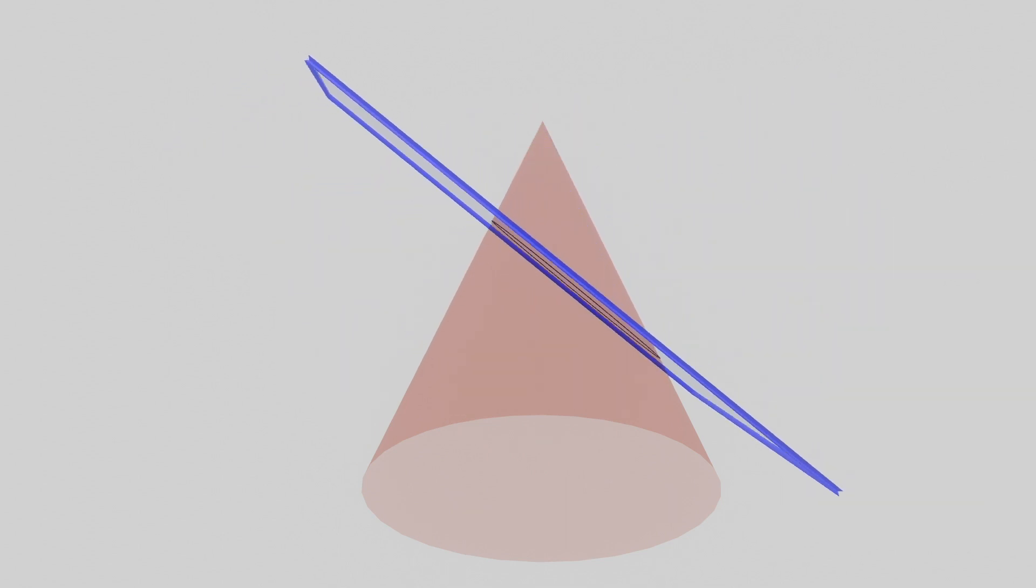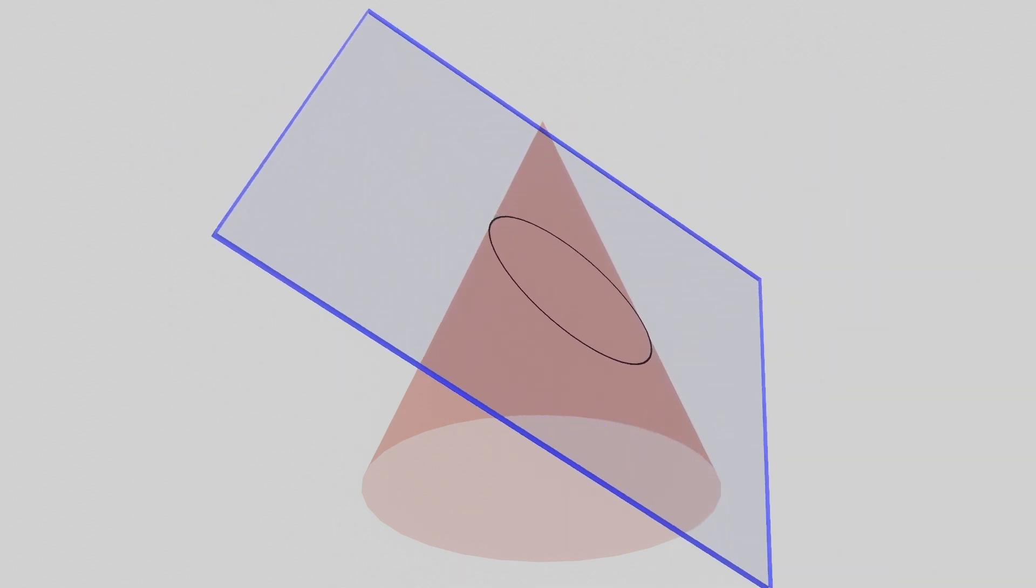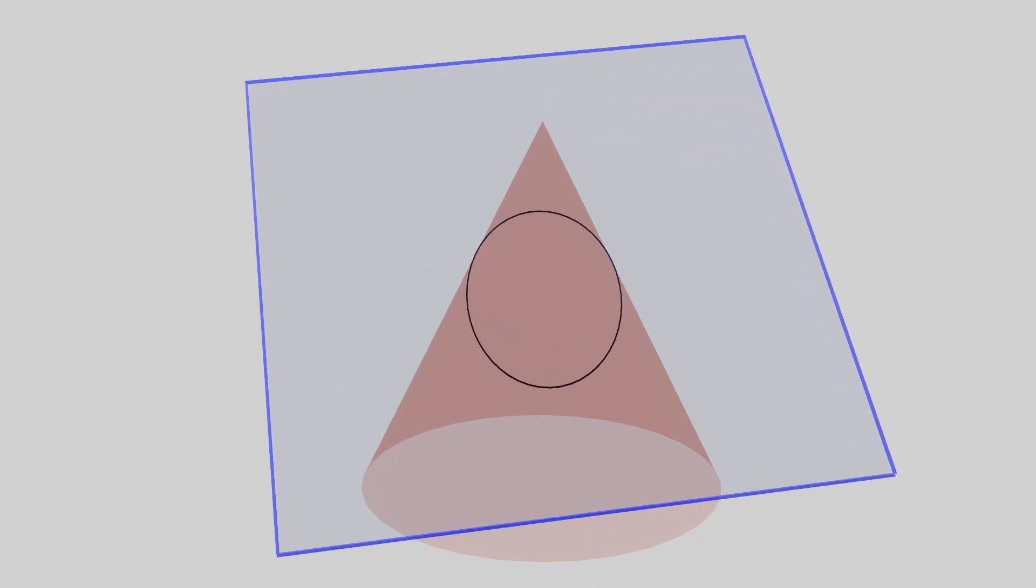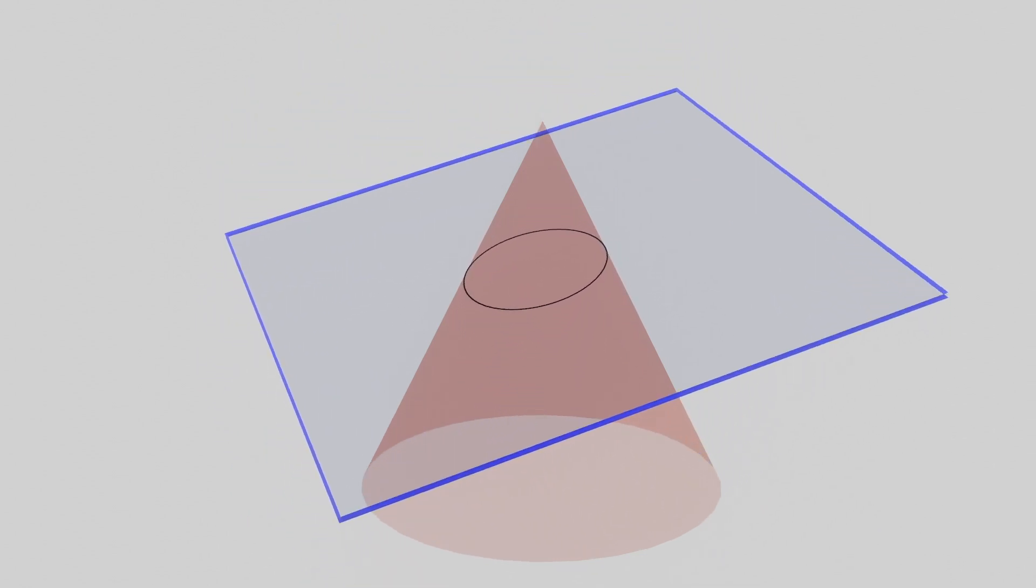Hey everybody! Today we're going to prove that the intersection of a cone and a plane gives us a conic section, and in particular focus on the case of an ellipse.